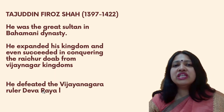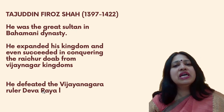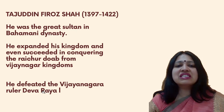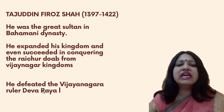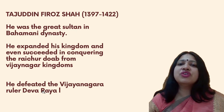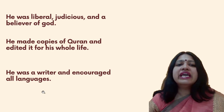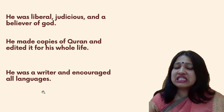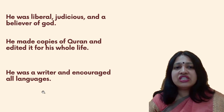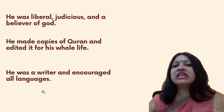The next important ruler was Tajuddin Feroz Shah, who ruled from 1397 to 1422. He was the greatest sultan in the Bahamani dynasty. He expanded his kingdom and even succeeded in conquering the Raichur Doab from the Vijayanagara kingdoms, defeating the Vijayanagara ruler Devaraya I. Each Bahamani ruler seemed always to be in conflict with one of the Vijayanagara rulers. Feroz Shah was liberal, judicious, and a believer in God — he made copies of the Quran throughout his life, showing that despite his military successes he remained deeply religious.